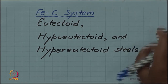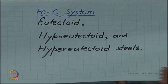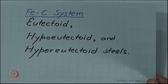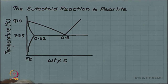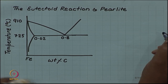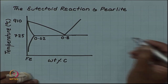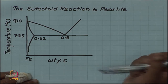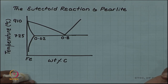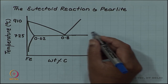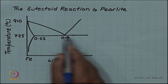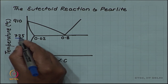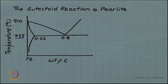We will look at that in detail. First, let us understand what we mean by eutectoid, hypoeutectoid, and hypereutectoid steels. This is the lower portion of the phase diagram which you saw last time, and this is the eutectoid horizontal at 725 degrees Celsius.